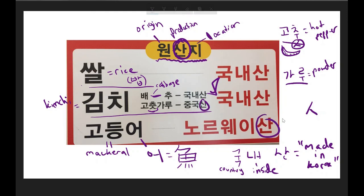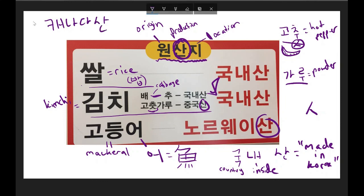After any country name, you add 산 (san) to indicate that's where the food was produced. For example, you'd say 캐나다산 for from Canada, or 미국산 for from America. Right here we have 중국 (chungguk), which refers to China, so that item is 중국산 — from China. And this one spells out 노르웨이산 (noreuweisan), meaning from Norway. So this item is from Norway, one is from China, and the rest are all 국내산 — from Korea. That was fun, I hope you learned a lot!